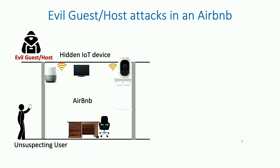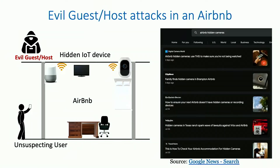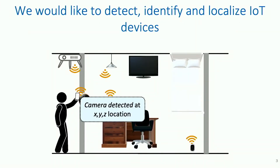These IoT devices are also frequently used by attackers to commit domestic abuse. This threat is not just hypothetical, and it's actually very, very real. A quick Google search shows around eight articles written on this problem just last month. So what we really need is a system to identify and localize a hidden IoT device.